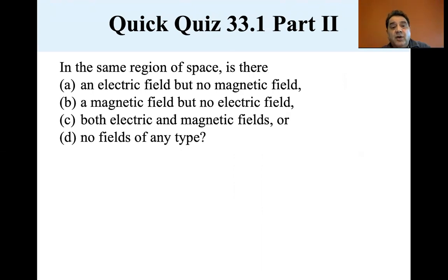Well, we're going to learn in this chapter that there exists, whenever you have an electric field, you have a magnetic field. Whenever you have a magnetic field, you have an electric field. So both electric and magnetic fields exist between the region of space between the capacitors.